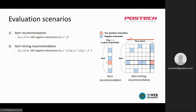We evaluate our model in two evaluation scenarios. The first one is item recommendation, which evaluates the model's performance on predicting the item at the target time. The second scenario is item timing recommendation, which evaluates the model's performance on predicting both the item and the timing at the same time. Because this scenario requires a higher degree of understanding over the time information, we argue it is more suitable for evaluating time-aware recommender systems.